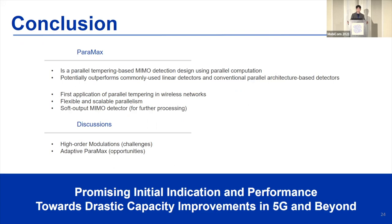In conclusion, Paramax is a parallel tempering based MIMO detection system using parallel computation. We have shown that it potentially outperforms commonly used linear detectors by enabling currently challenging MIMO regimes. It also potentially outperforms conventional parallel architecture detectors by requiring fewer processing elements to achieve near-ML performance. This is the first application of parallel tempering in wireless networks, and we believe this is a very promising indication towards drastic capacity improvements in 5G and beyond. Of course, many challenges and opportunities remain to be explored further.